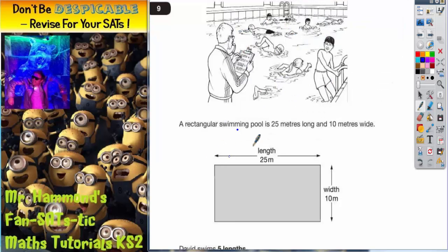Question 9. A rectangular swimming pool is 25 metres long and 10 metres wide.